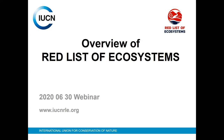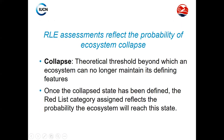I'm going to make a short presentation for about 10 minutes with an overview of what the Red List of Ecosystems is, its potential applications, and then I will leave some time for David Obura to present the assessment of the coral reefs of the West Indian Ocean. So I will start with the basics of what Red List of Ecosystems is. A Red List of Ecosystem assessment reflects the probability of ecosystem collapse.